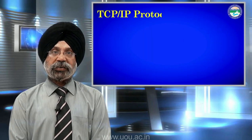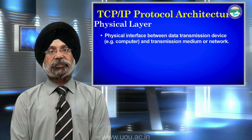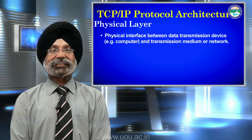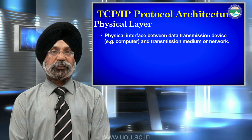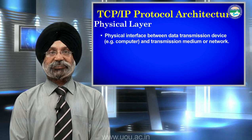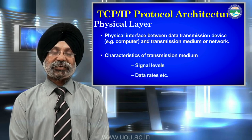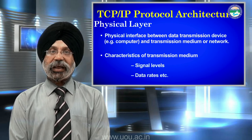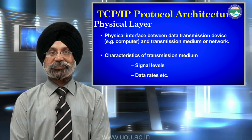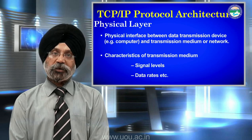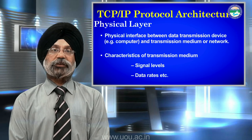Taking the layers independently: the physical layer sits between the transmission device and the receiving device. The communication is between the transmitter and the receiver, and the characteristics include signal levels and data rates. Signal levels are 0 and 1, and data rates is the speed at which data is transported — whether it's a 56.6 kbps or a 100 Mbps link.